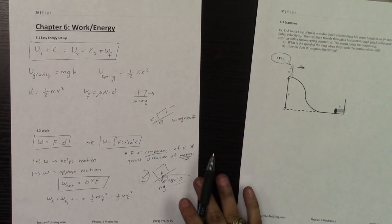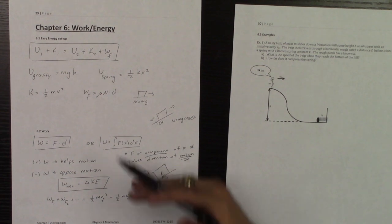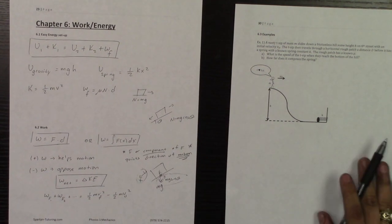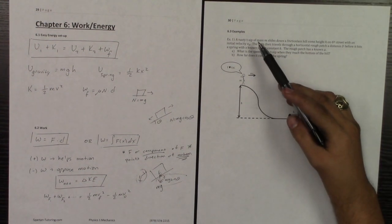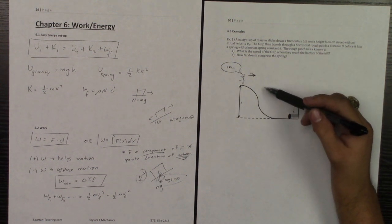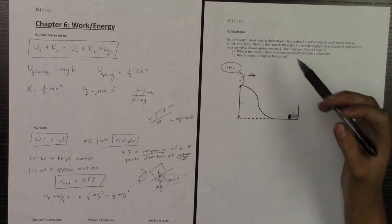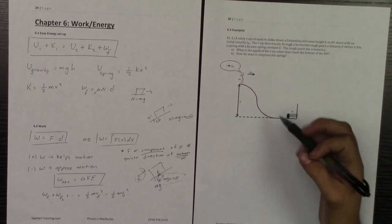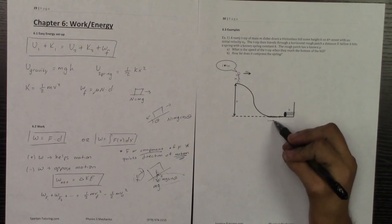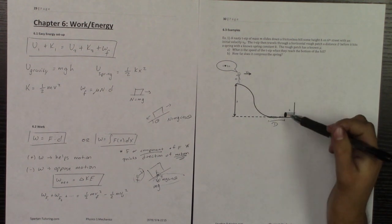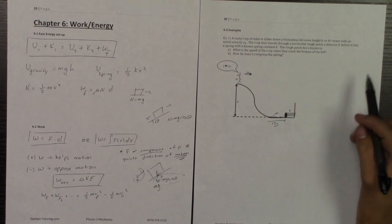So what I want to do next is I want to do a conservation of energy problem, and then I want to do a work problem, that way you can see how all of this is utilized. So let's take a look here at number one. For number one, what it says, it says we have a nasty t-sip of a mass m slides down a frictionless hill that is some height h on 6th street with an initial velocity v0. The t-sip then travels through a horizontal rough patch, a distance d, so here's going to be your horizontal rough patch, a distance d, before it hits the spring with a force constant k. The rough patch has a known coefficient of friction mu.